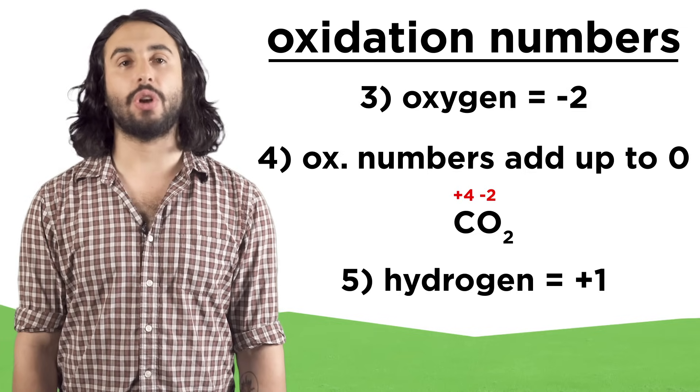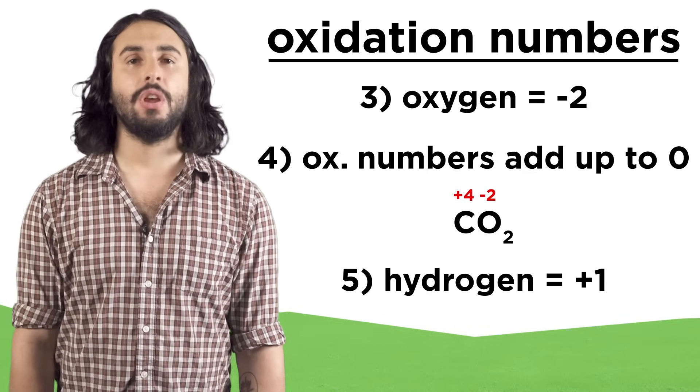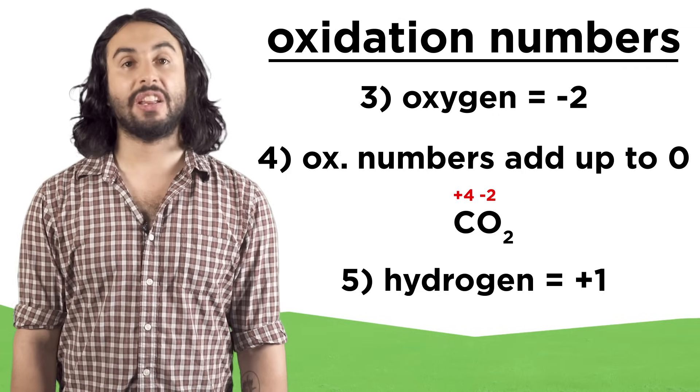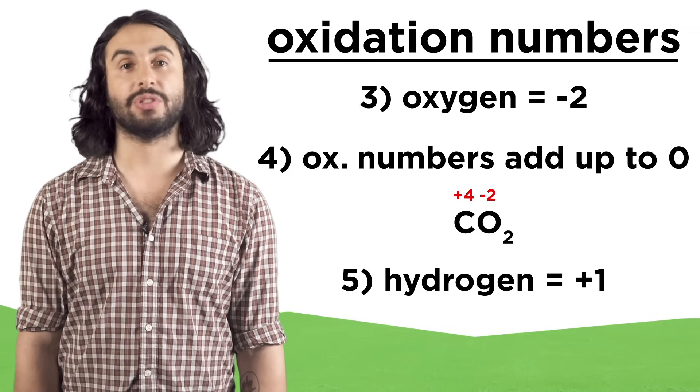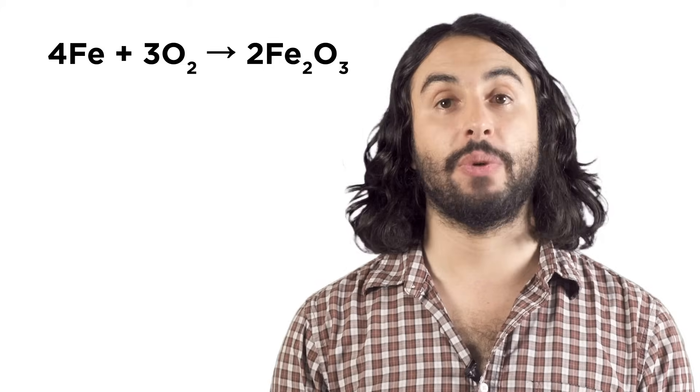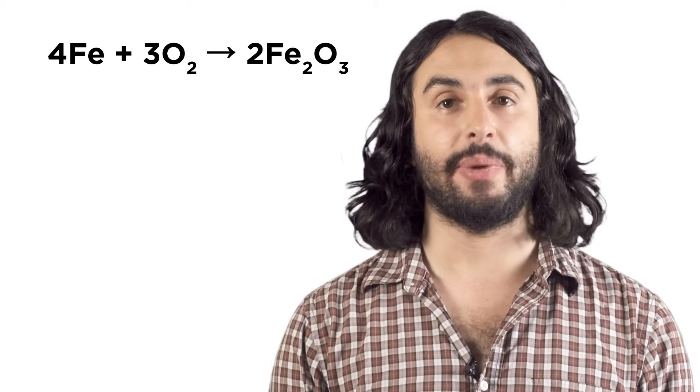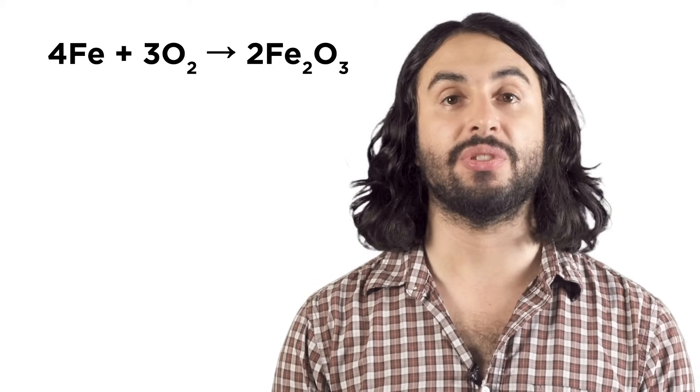Hydrogen is almost always +1, so using these numbers for oxygen and hydrogen we can usually assign all the other numbers accordingly. Let's take a look at a reaction. On the left we have elements, so those have oxidation numbers of zero.